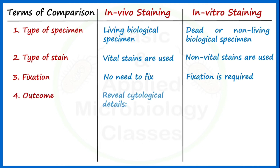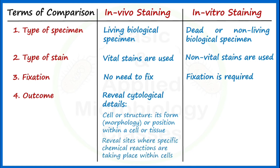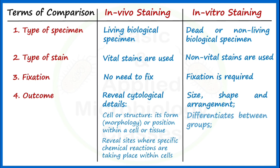The fourth point of difference is outcome. In vivo staining reveals cytological details like cell structure, form, morphology, or position within a cell or tissue, and helps identify sites where particular chemical reactions are taking place. In vivo staining is generally used in histology and disease diagnosis. In vitro staining outcomes include determination of size, shape, and arrangement, differentiation between different groups, and identification of special structures. In vitro staining finds major application in staining microbial cells like bacteria.